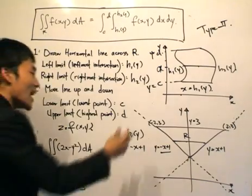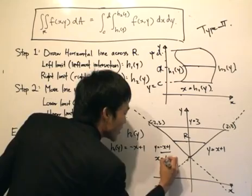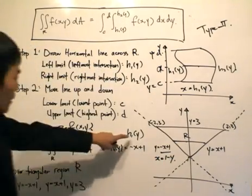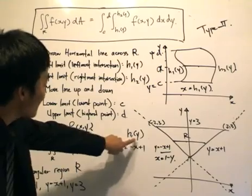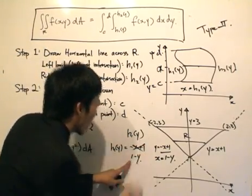We need to somehow rearrange this. Yes, it's the same function, but we need to write it in terms of X, which is essentially as easy as this. So remember, this needs to be in terms of Y. H1 needs to be in terms of Y. So it's not, it's going to be 1 take away Y. That's our H1.